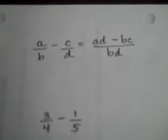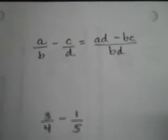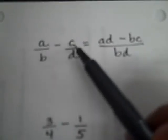Hi again, Kipsers. This is Mr. Almeida talking to you about subtracting fractions. As you know, the rule for subtracting fractions is a over b minus c over d equals a times d minus b times c all over b times d.